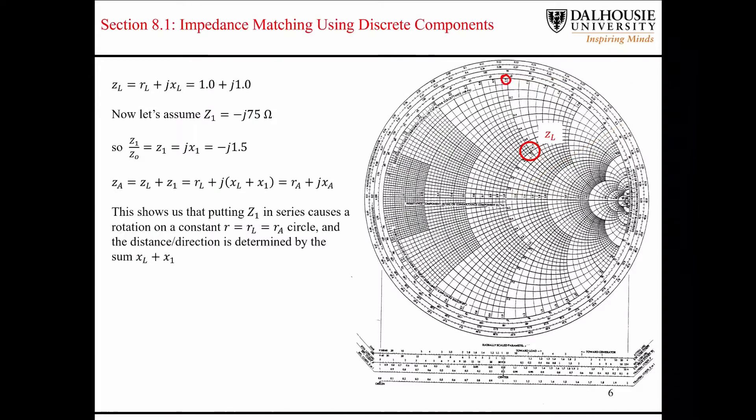Okay, so if we were to try to add a capacitor in series with our ZL, the first thing you do is find the normalized form of this impedance, and we can see it here as 1.5.